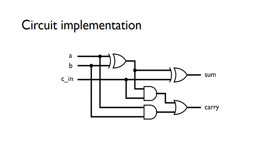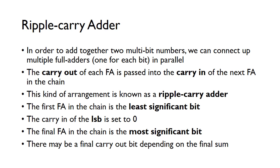When we want to add two multi-bit numbers together, a single full adder isn't enough — we need one full adder for every bit position. For two four-bit numbers, we need four single-bit full adders. The carry-out of each full adder feeds into the carry-in of the next one in the chain. Because the carry ripples along this chain, we call this a ripple carry adder.